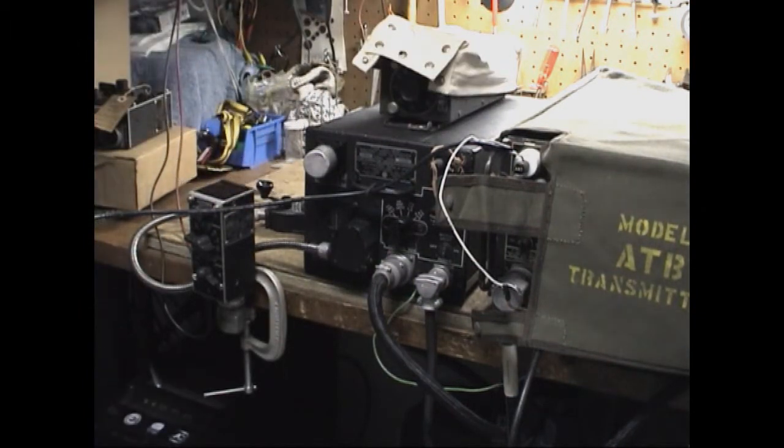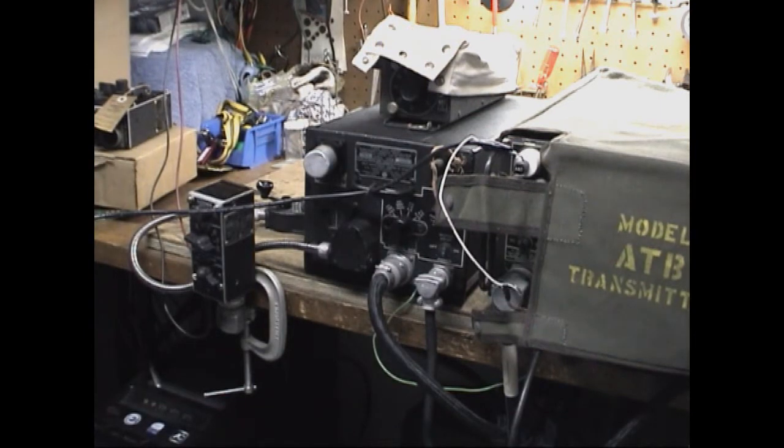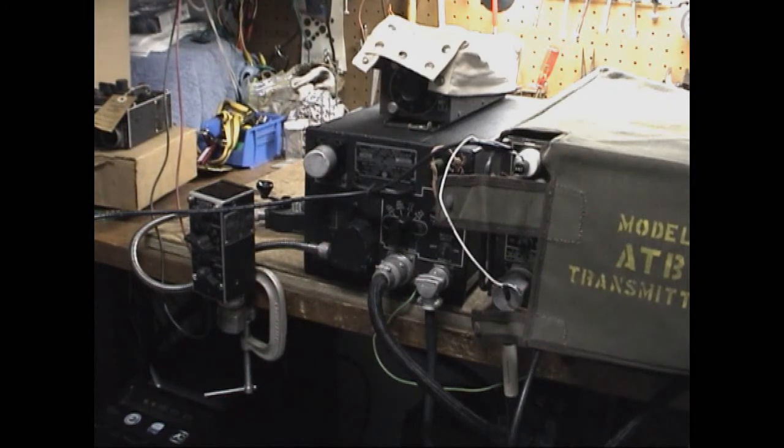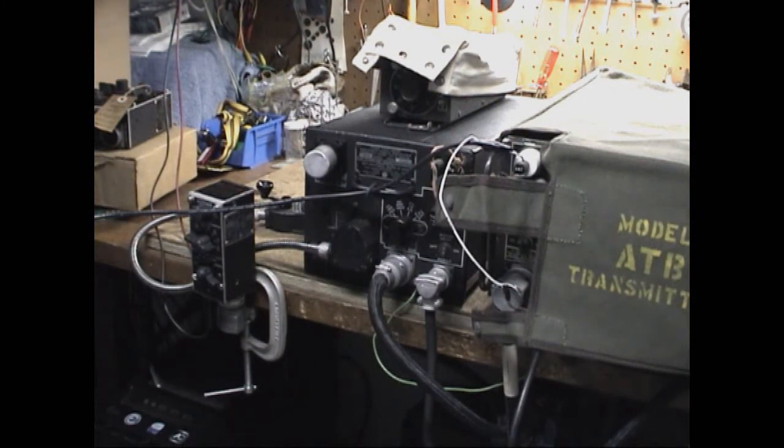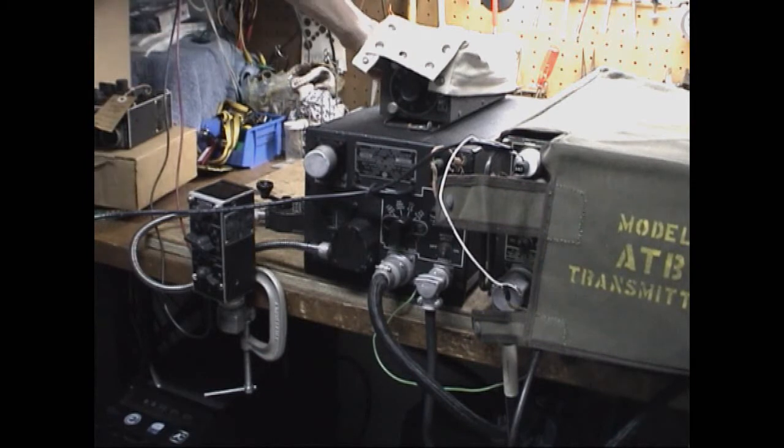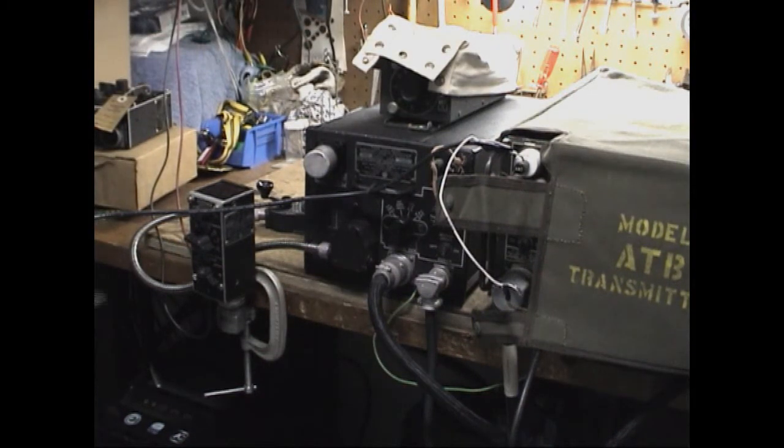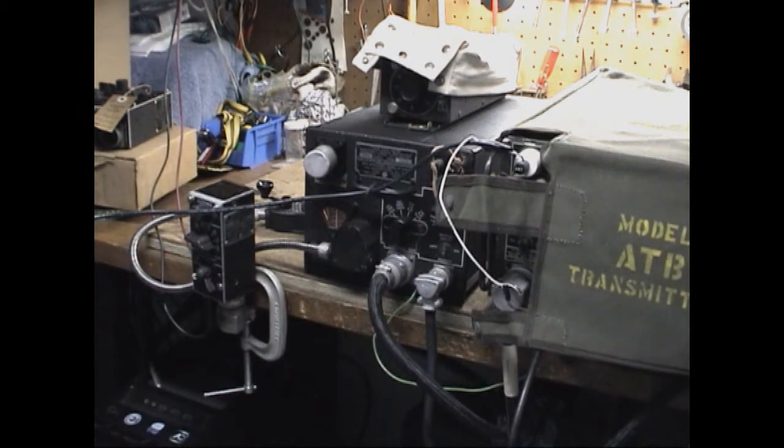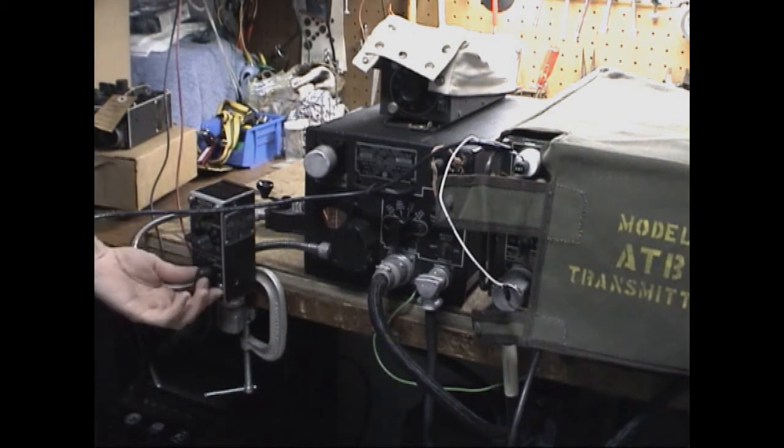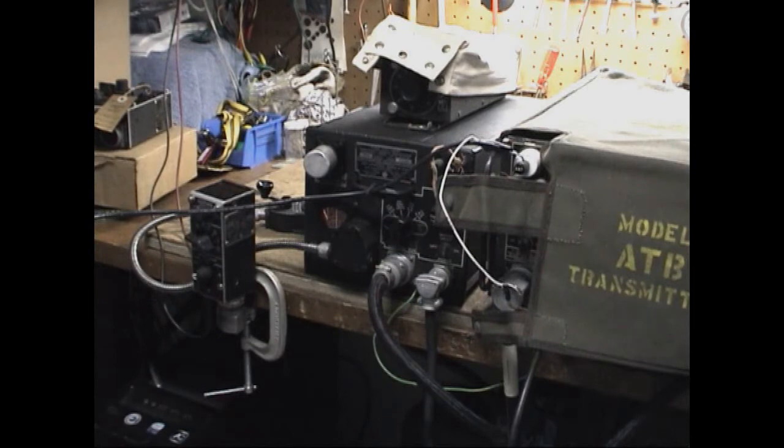So that's pretty much the basics of the ARB. Again, it's four bands. It covers 195 through 9 megs. It's powered by 24 volts with an internal dynamotor. And what we'll do now, we'll put some power to it and see what happens here.